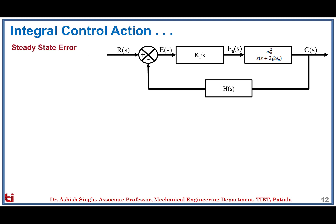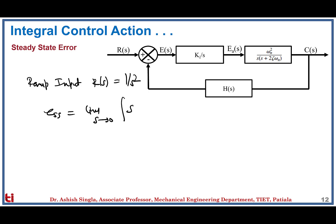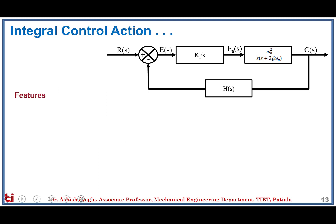For the steady state error of integral control: following the same steps, for a ramp input where R(s) = 1/s², the steady state error equals lim(s→0) s·E(s), which turns out to be 0. This is the biggest advantage of using integral control action — where the proportional controller has a steady state error of 2ζ / (KP·ωn), integral control reduces this to 0.